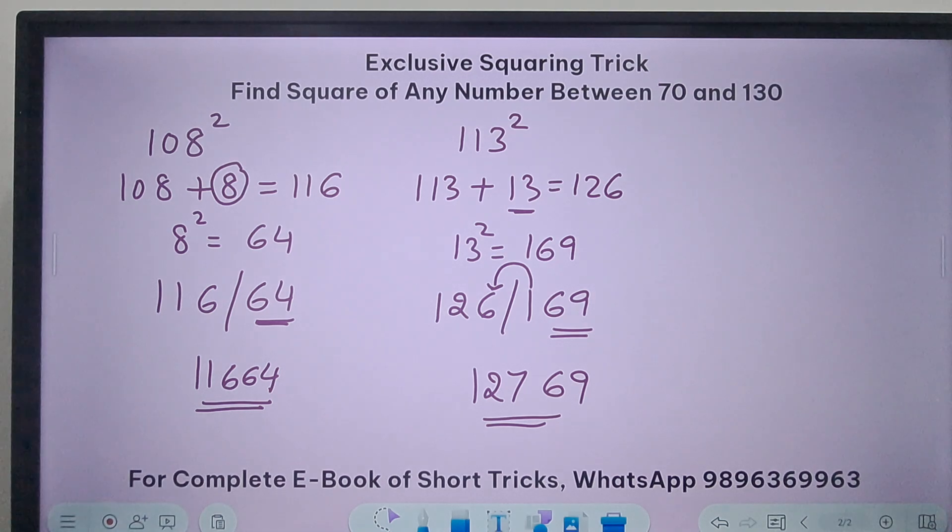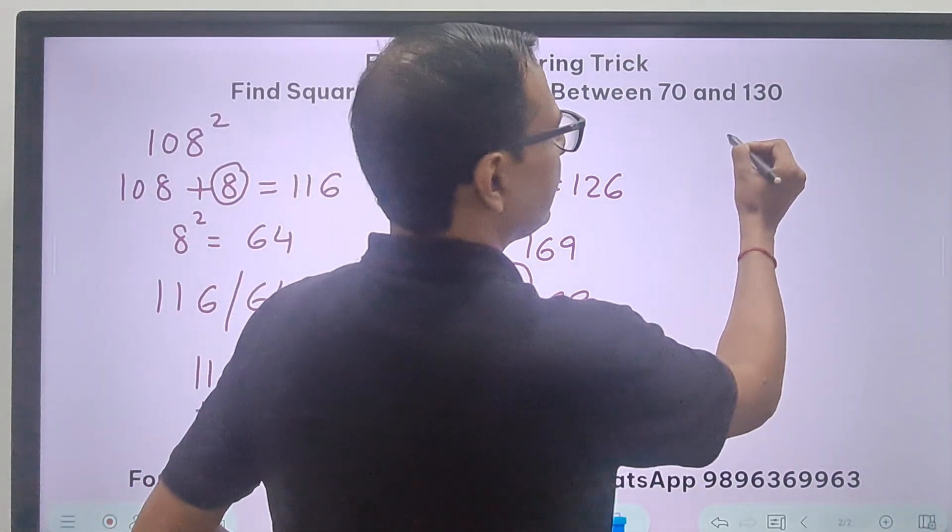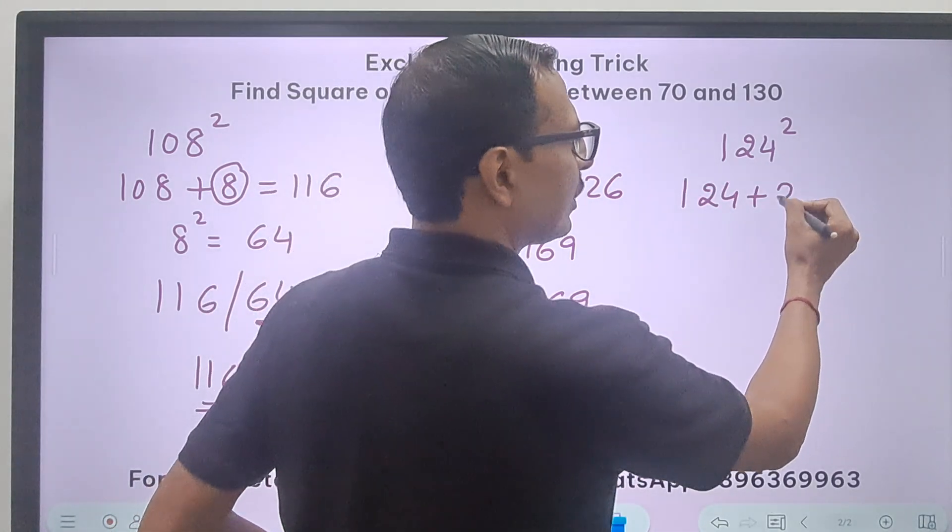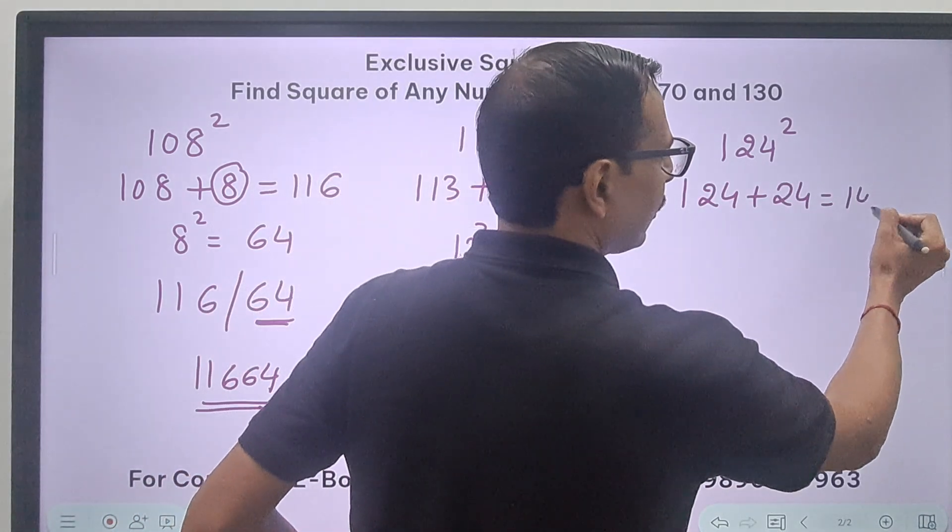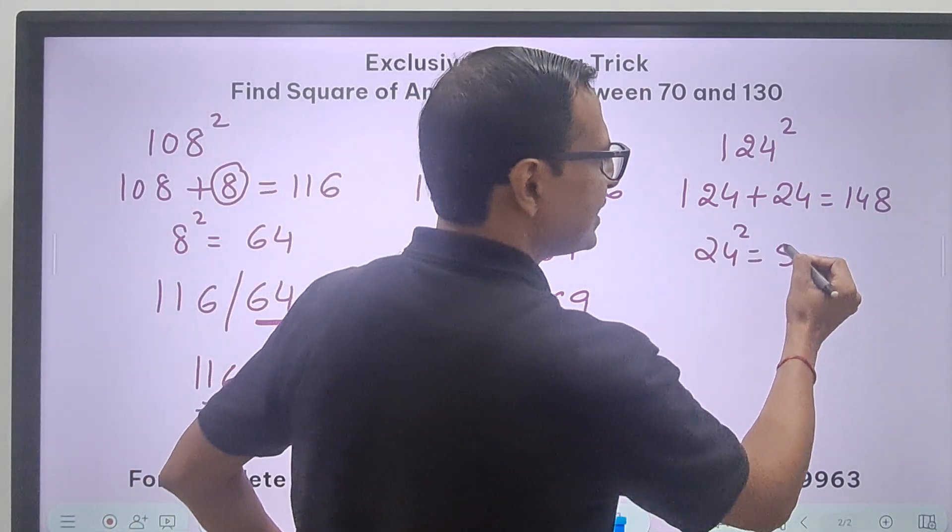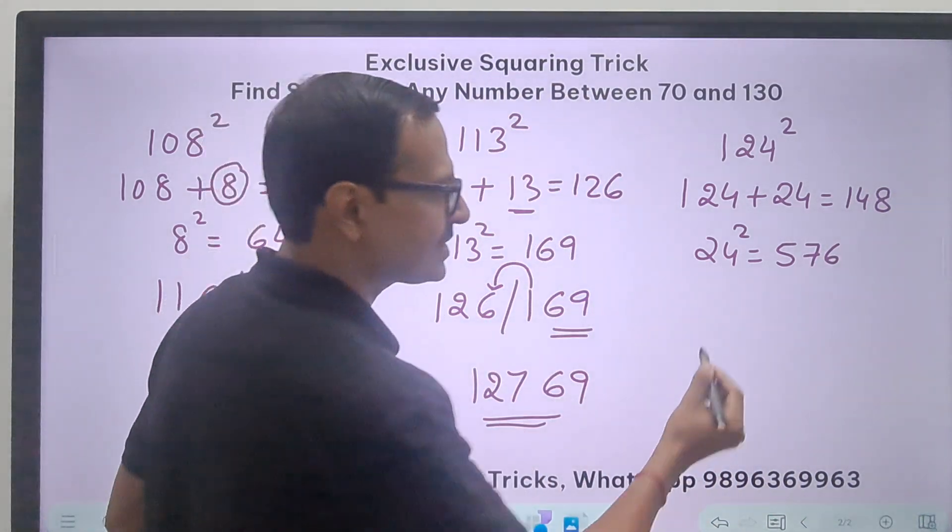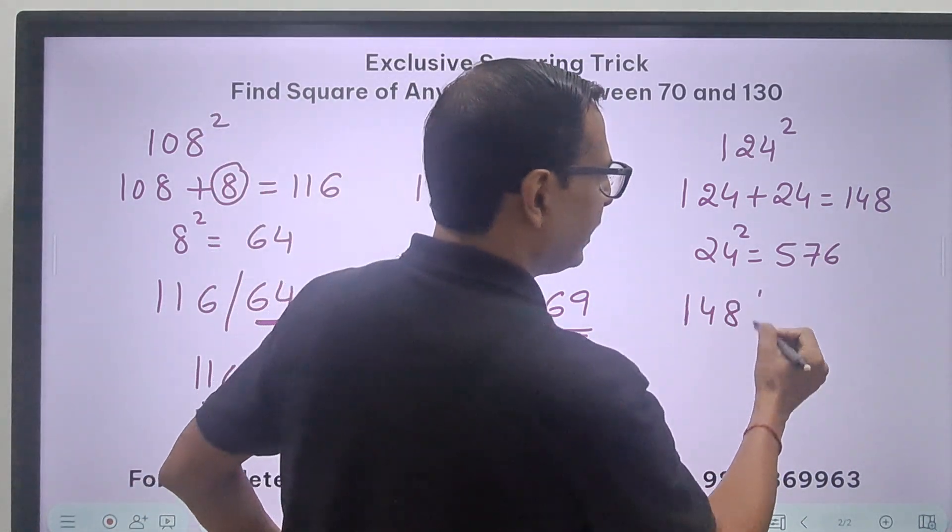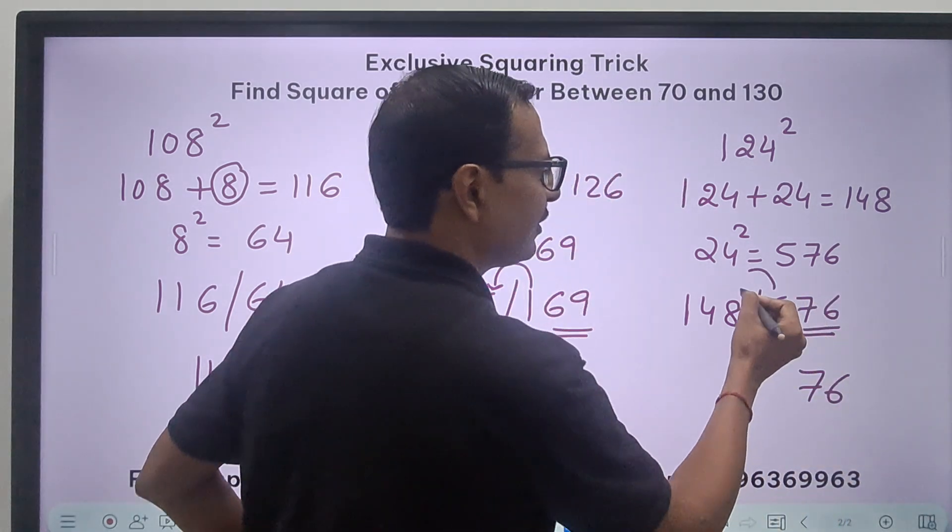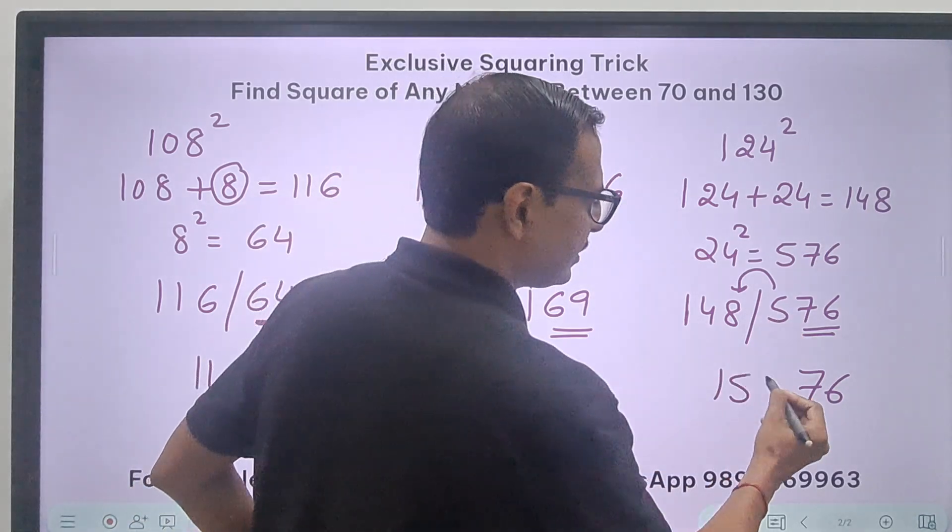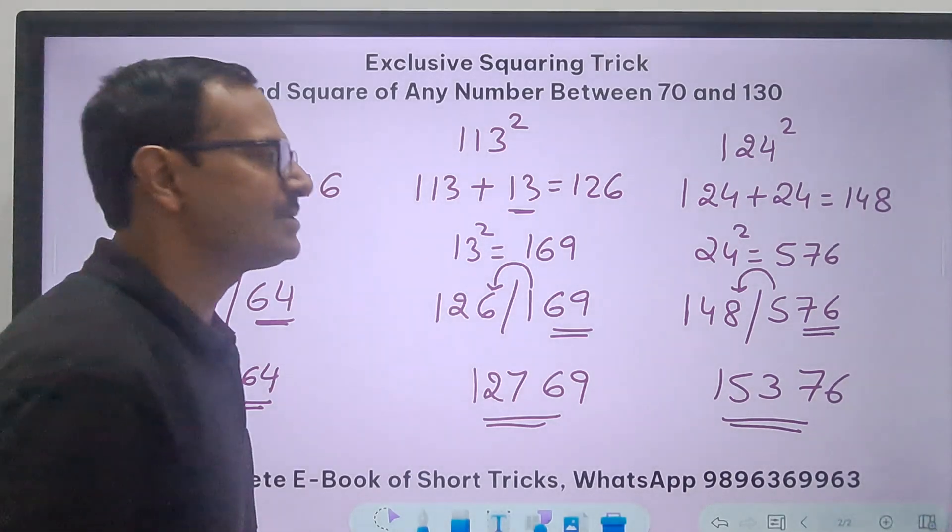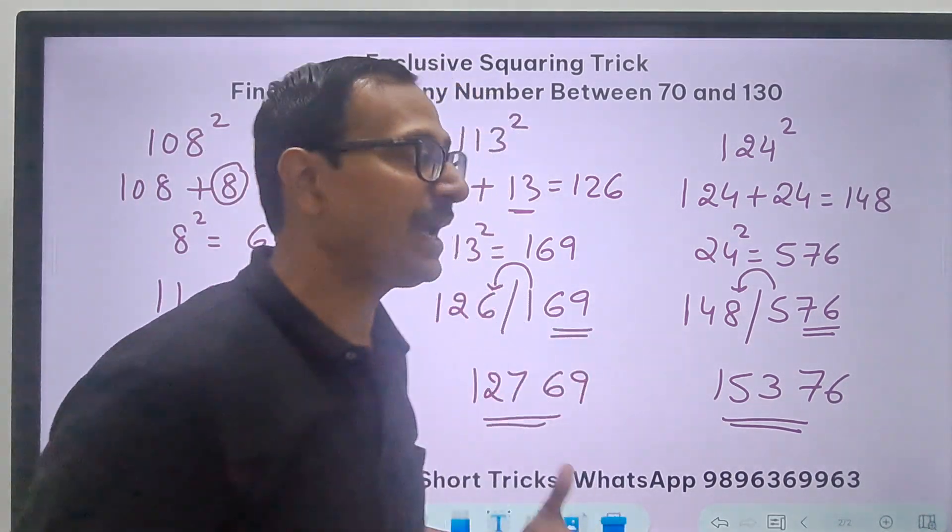Likewise, you can take one more example: 124 square. So 124 and the excess 24 gives you 148. That will be my first part, and excess is 24, so 24 square is 576. This is my second part. Just write them together: 148 and 576. Retain the 76, carry forward the 5. 148 plus 5 is 153, and there we go. The square of 124 is 15376.